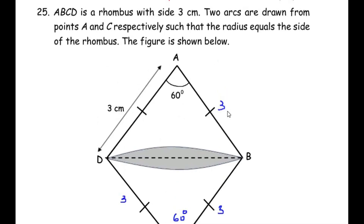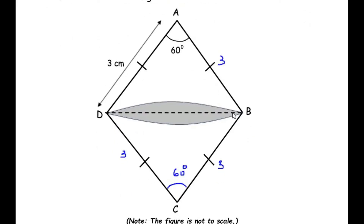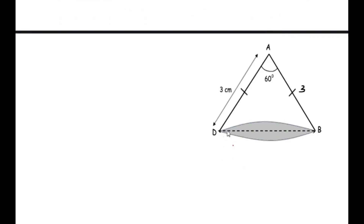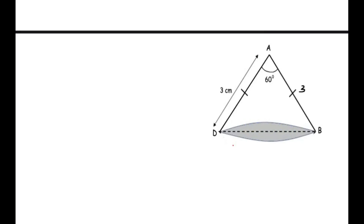Since arc BD is drawn from A and arc BD is also drawn from C, we have two sectors: sector ABD with A as the center, and sector CBD with C as the center. The line BD acts as a line of symmetry, dividing the shaded region into two equal halves, so the area on one side equals the area on the other.